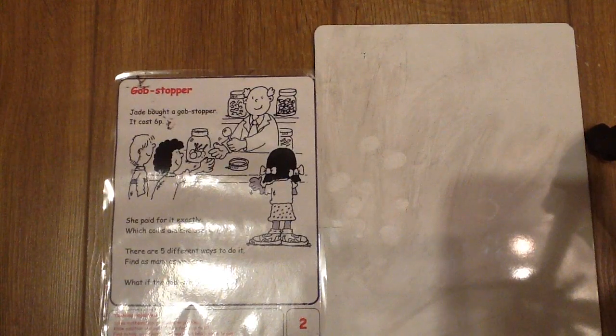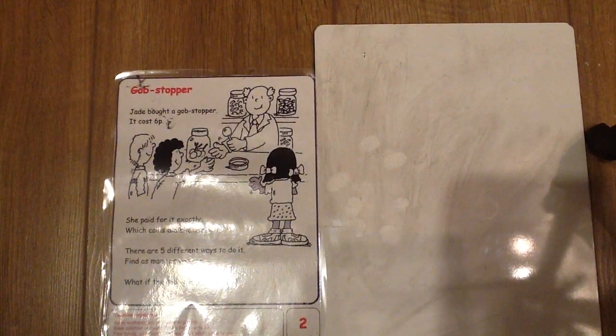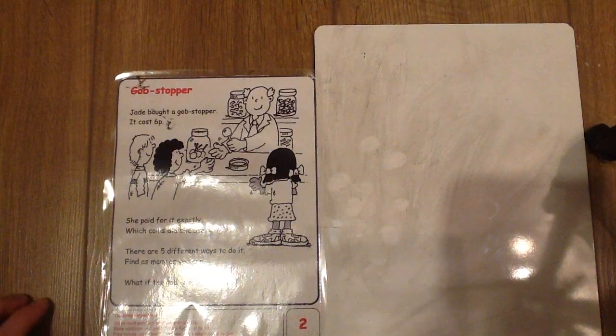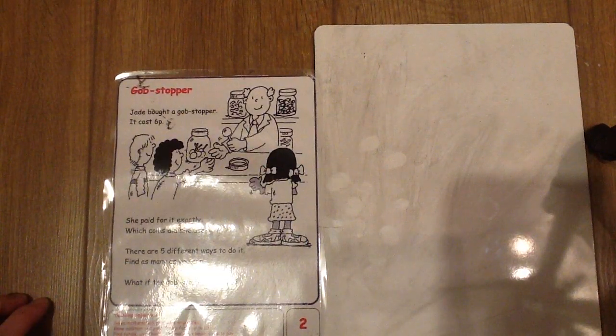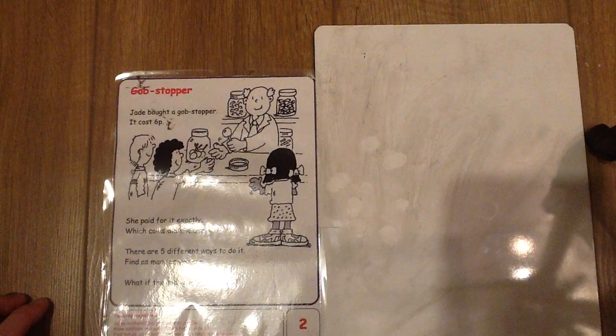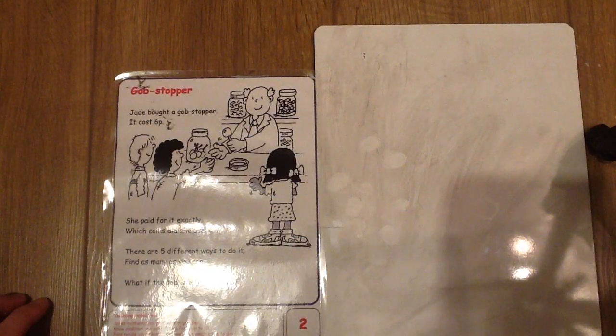Jade brought a Gobstopper. It costs 6p. She paid for it exactly. Which coins did she use? There are five different ways to do it. Can you find as many as you can?